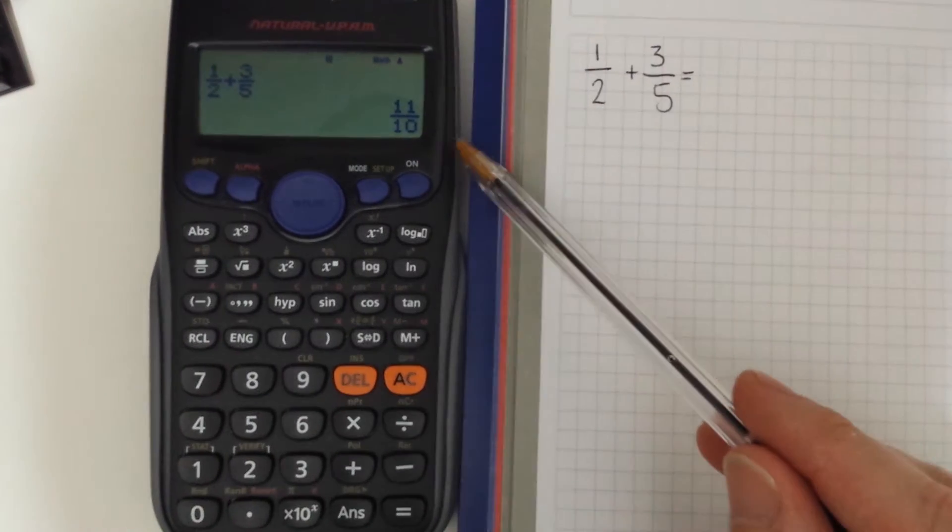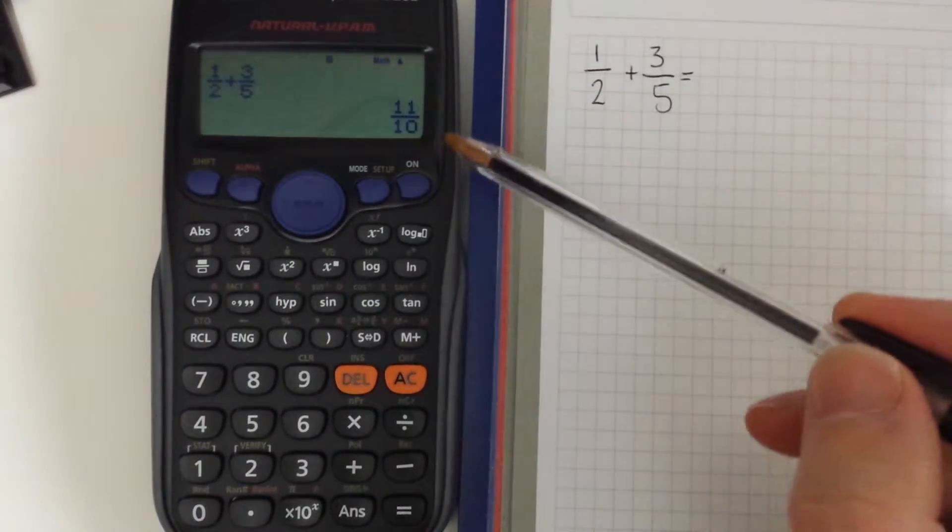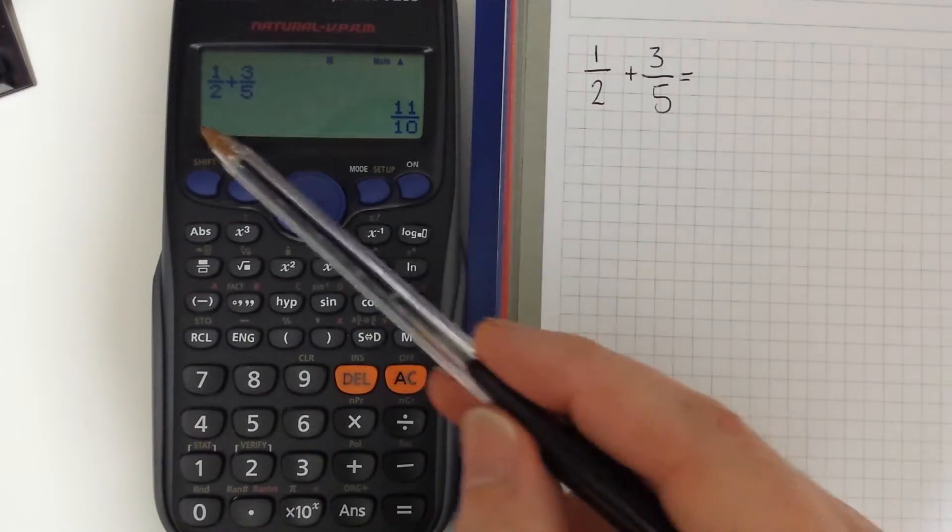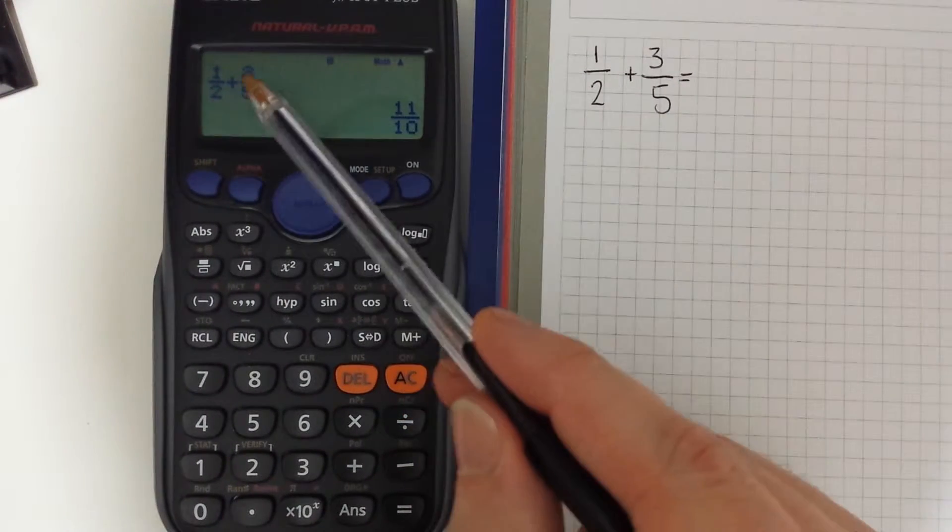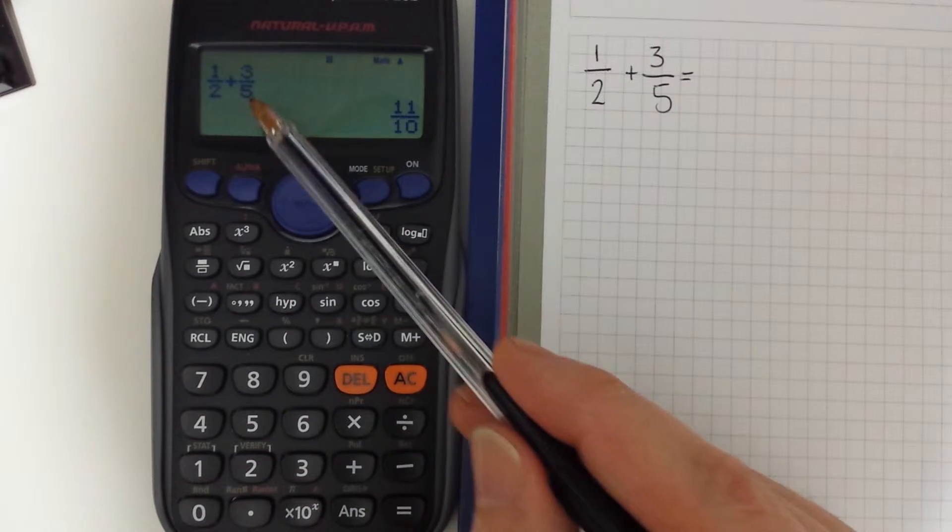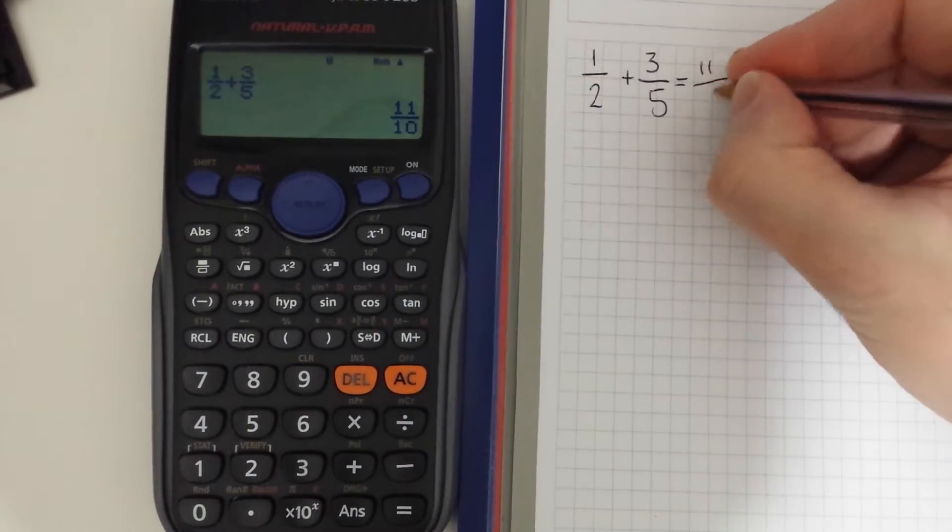So that's 11 tenths, that's what we'd expect because 10 is the lowest common denominator, 2 times 5 is 10. So that would be 5 tenths and that would be 6 tenths. So that's 11 tenths.